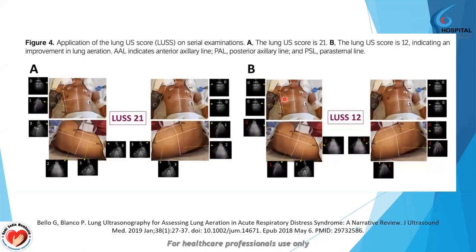Here is an example of the lung aeration score in use. In patient A, before lung recruitment was administered, the patient had a lung ultrasound score of 21. After performing lung recruitment, the lung ultrasound score improved from 21 to 12. This demonstrates that lung ultrasound is very beneficial in determining whether the patient has improved or not.